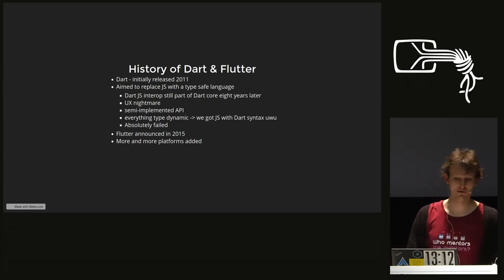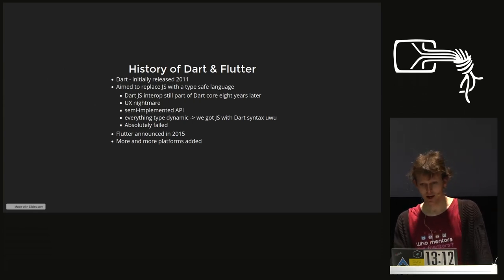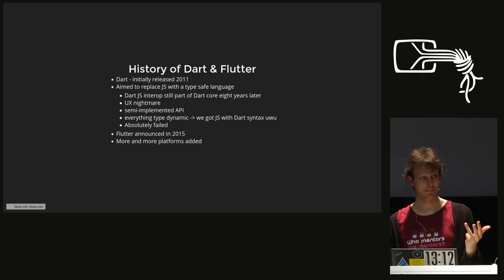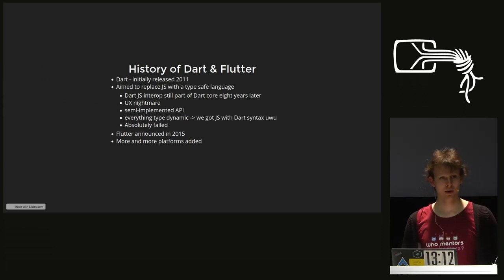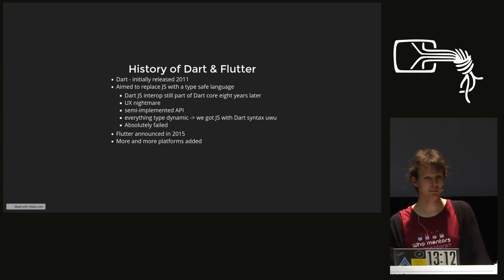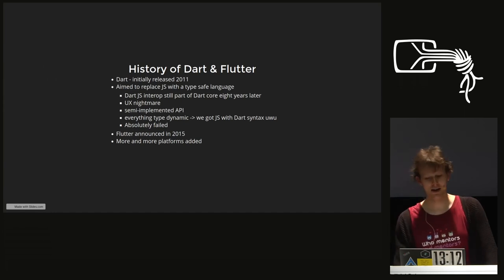Flutter was announced in 2015, initially as an Android-only SDK aiming to render at 120 frames per second. Over time, Flutter added more platforms: iOS, then a Linux desktop preview, web support, Mac desktop, and Windows desktop — all counted as stable nowadays, though that's debatable. Currently Flutter is a truly cross-platform development kit. The only common platform it doesn't run on is BSD, which is a pity for FreeBSD fans.